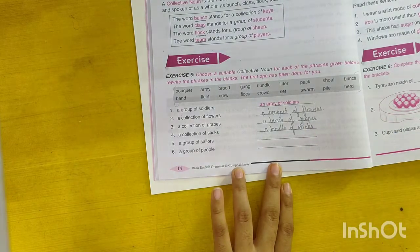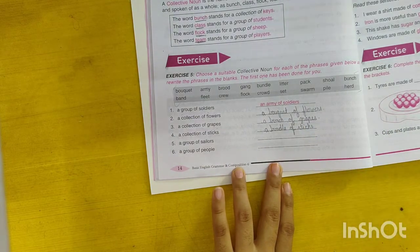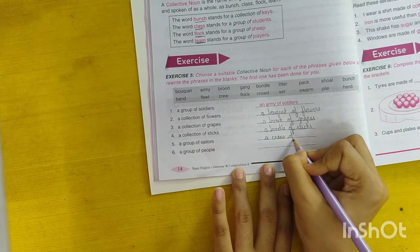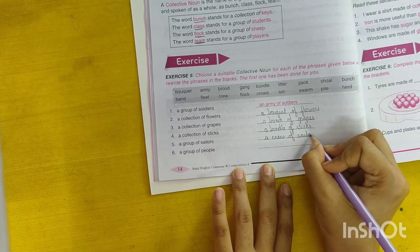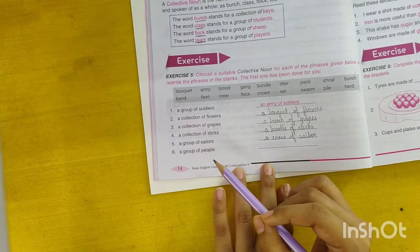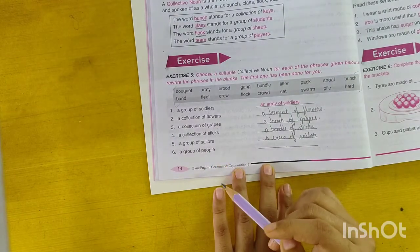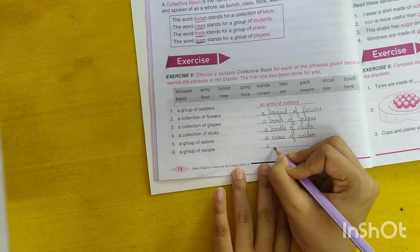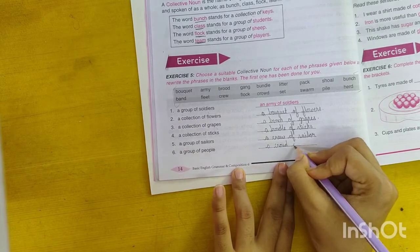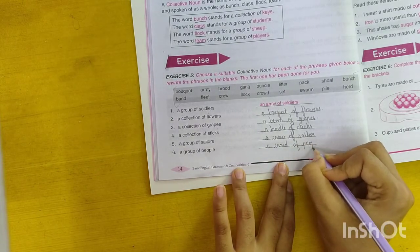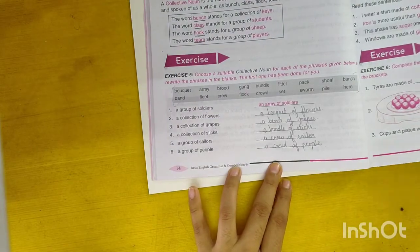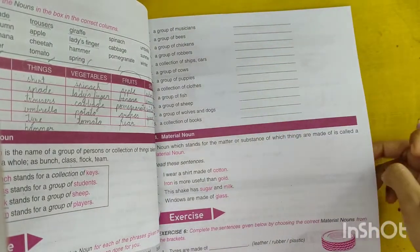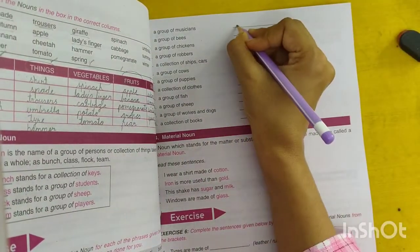A group of sailors, a crew of sailors. A group of people. A group of musicians, a band of musicians.